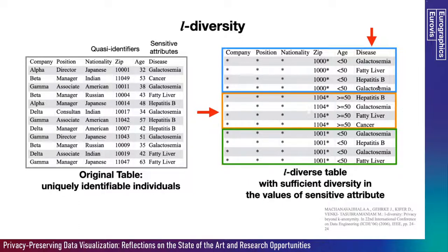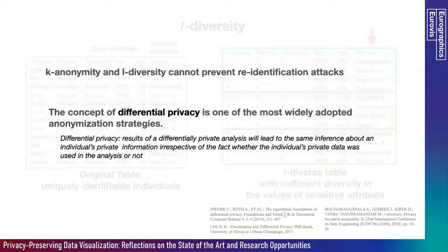But if somebody knows that all the diseases in the last class are related to the liver, then they can easily identify that any individual within this group has a liver problem. Thus, we use a more robust concept of differential privacy, which states that any analyst analyzing a differentially private dataset will lead to the same inference about an individual's private information, irrespective of whether the individual's private data was used or not.